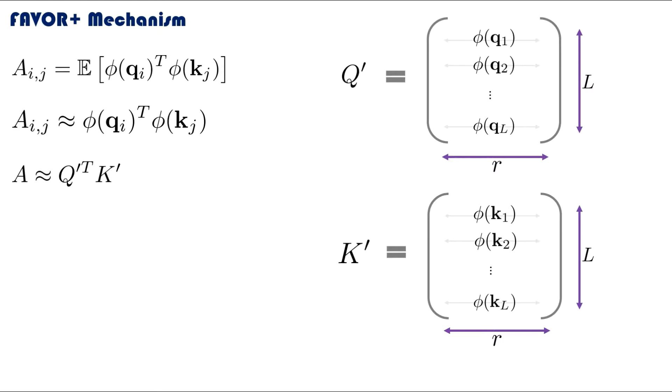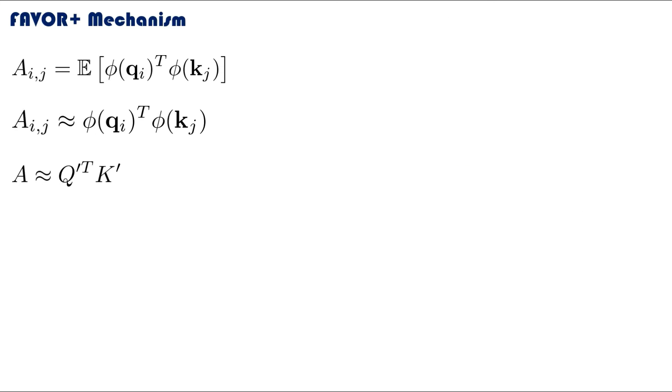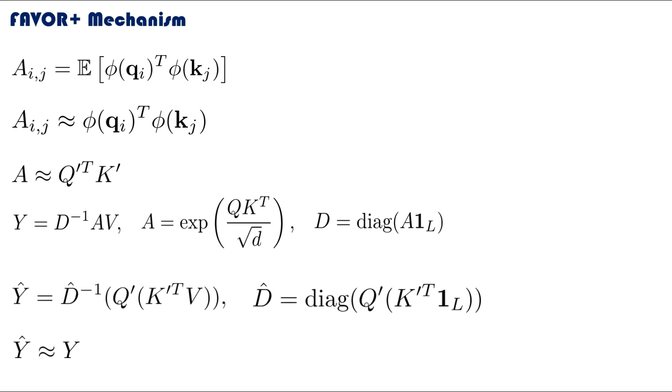This is essentially where the FAVOR+ mechanism makes a saving over the traditional attention mechanism, because we have eliminated the non-linearity. Computing the attention matrix can now be calculated directly by multiplying two matrices, which is a linear operation. From before we know the output of the traditional attention matrix mechanism is given by this formula. If we substitute in our approximate attention matrix formula, we can control the order in which we do the matrix multiplications to give us this new set of formulas to approximate the output to the attention matrix. I will call this approximate output to the attention mechanism Y hat.